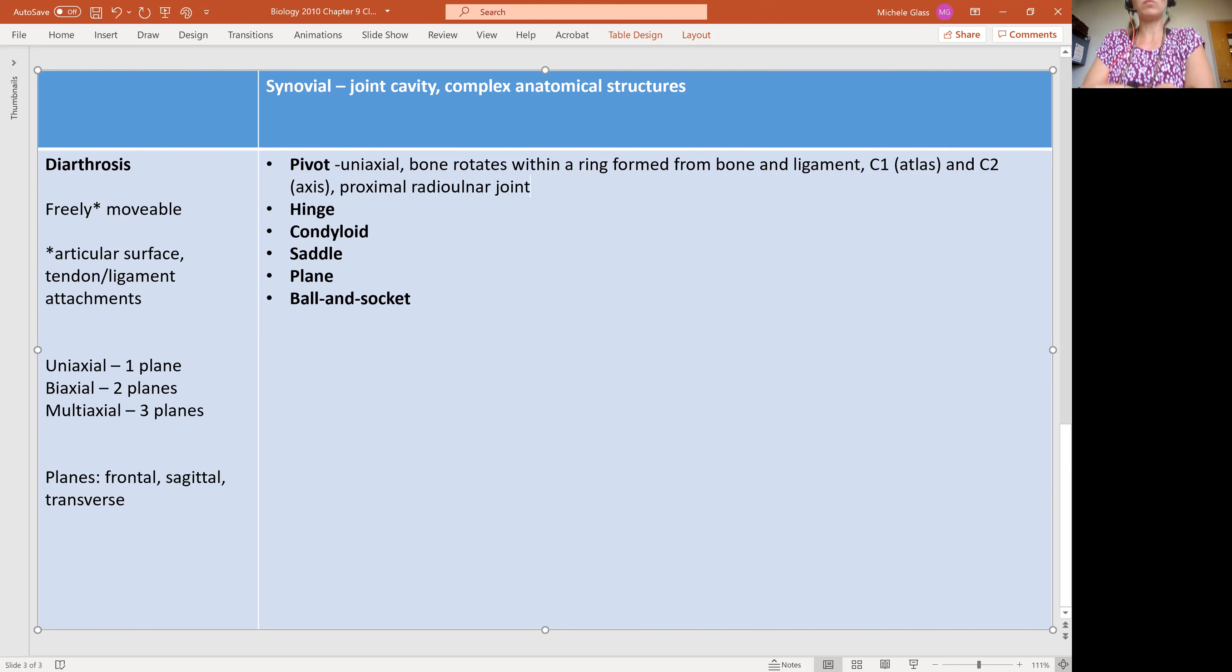Proximal means closest to the attachment point. In the case of the forearm, that's going to be the elbow. So radioulnar joint, we're talking about these two bones that are sitting side by side each other.